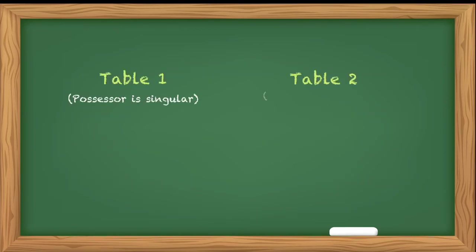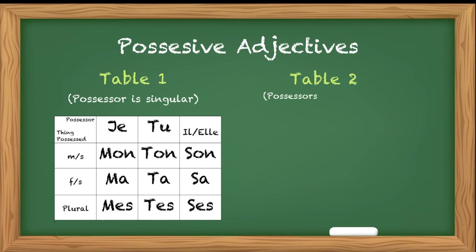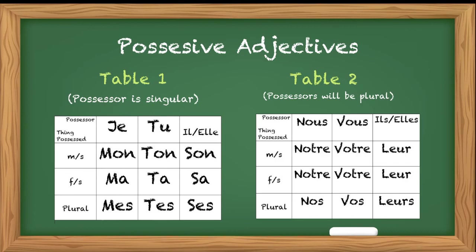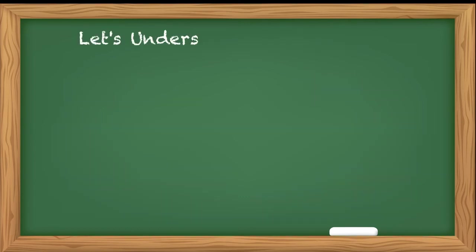Now let's come to table two, when the possessor is plural. If the possessor is nous, the possessive adjectives will be notre, notre, nos. If vous is the possessor, the possessive adjectives will be votre, votre, vos. And if the possessor is the third person plural ils/elles, then their, leur, leurs.